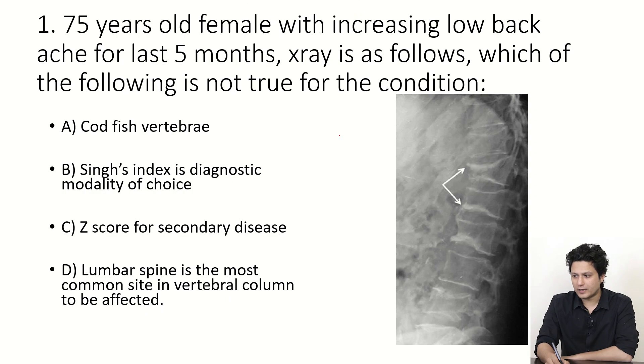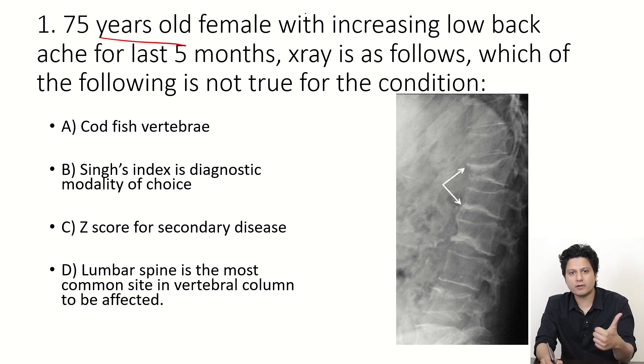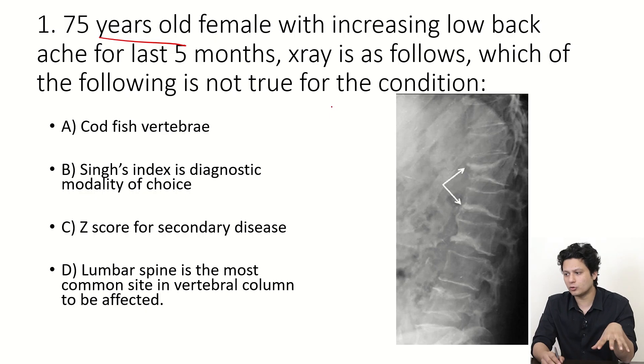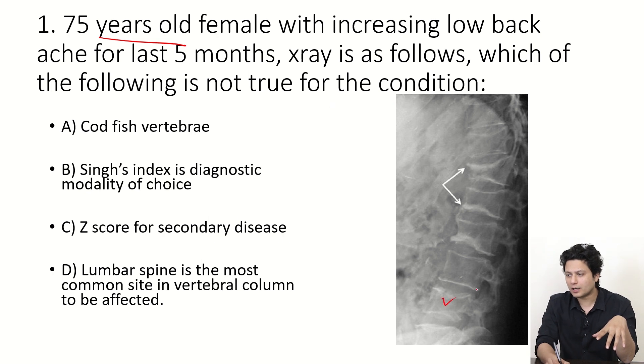Starting with the first question: a 75-year-old female presents with increasing low backache. There is no history of trauma or heavy weightlifting, and this has been going on for the last five months, meaning it is not an acute event but a long-duration course. Keeping all these things in mind, this condition points in the direction of a metabolic disorder.